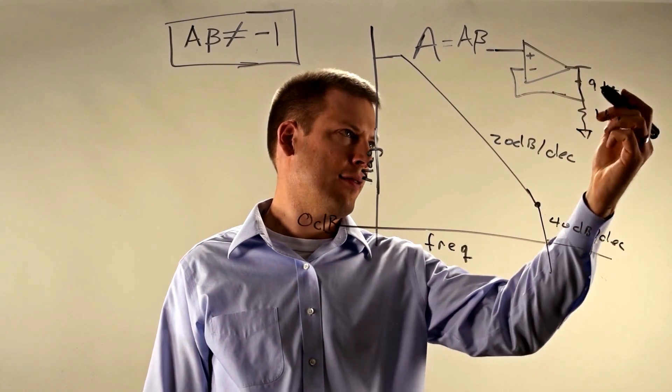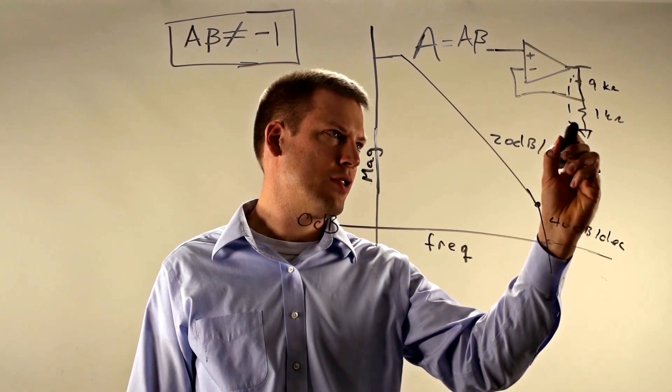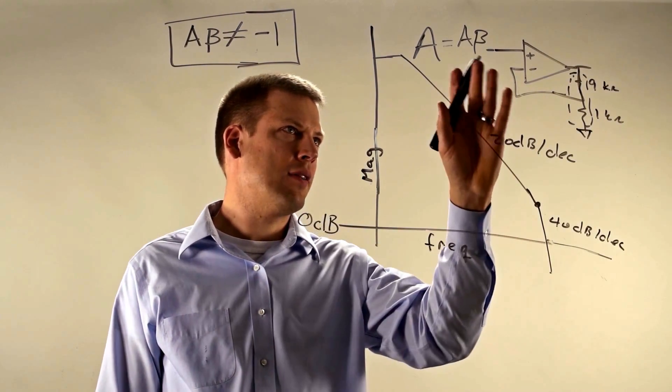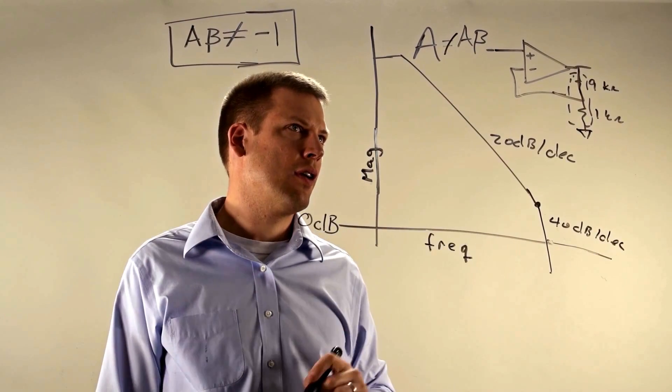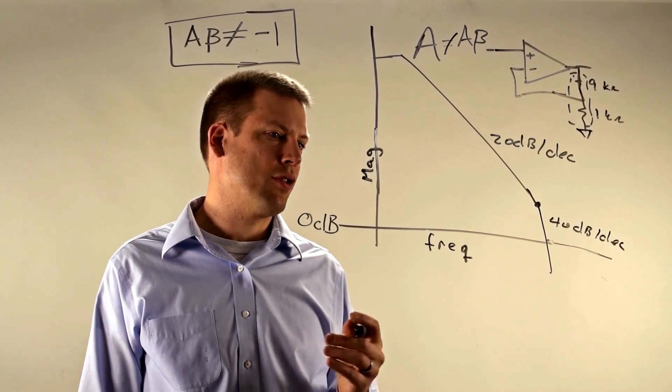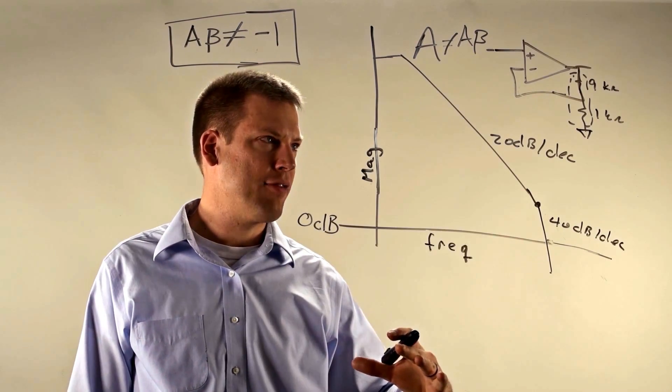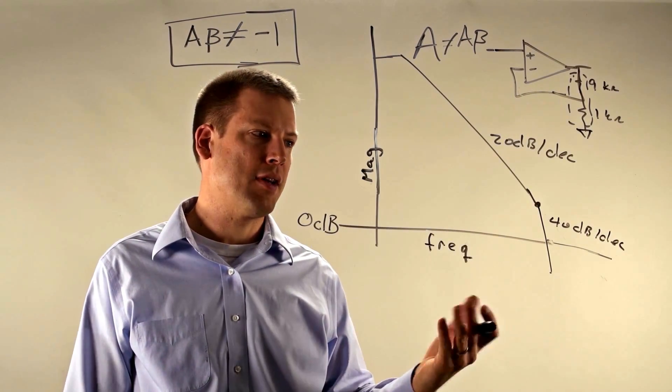So now I have a beta that's formed by this resistor divider of 1/10. We no longer have our loop gain equal to the open loop gain of the amplifier and so that beta is going to shift this whole graph down by 20 dB, by this 1/10.